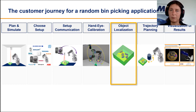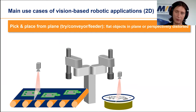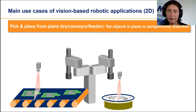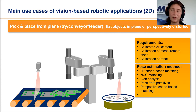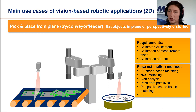Let's focus on the object localization part of a random bin picking application. In the 2D case, you have a plane — a tray, conveyor, or feeder — and objects on it may be perspectively deformed. You calibrate the 2D camera and the robot with the camera, then apply different functionalities depending on which objects need to be found and what the scene conditions are: high noise, many textures, and so on. You can use shape-based matching, NCC, blob analysis, and more to optimize the object localization for your requirements.